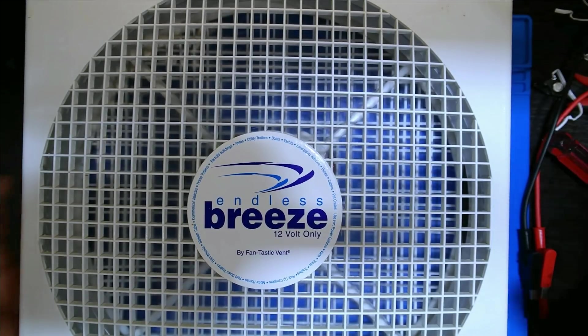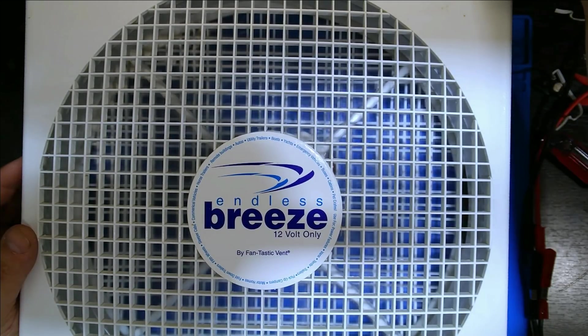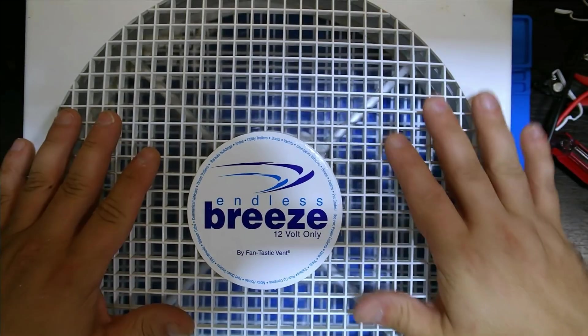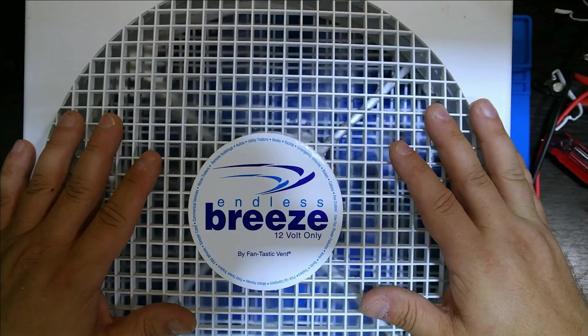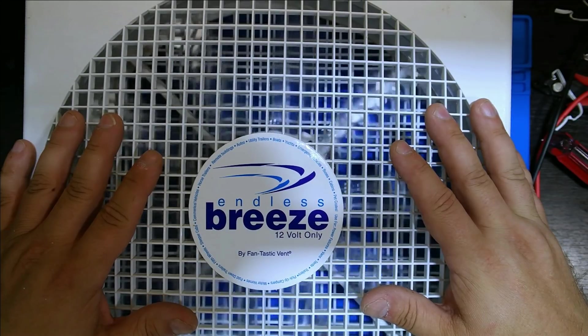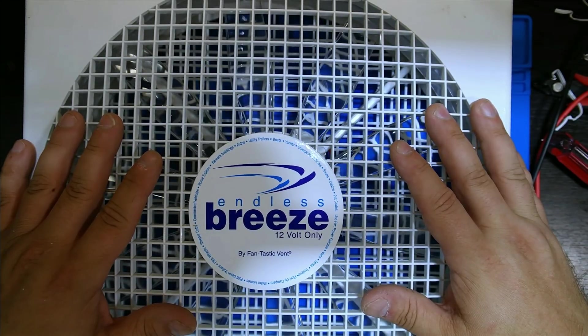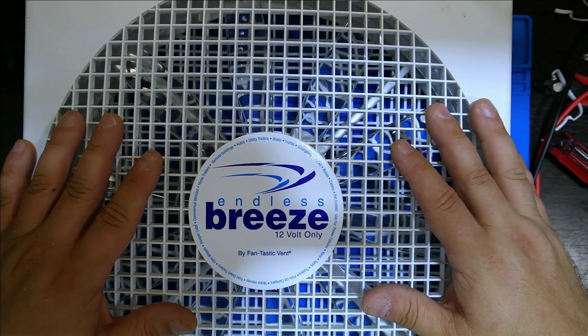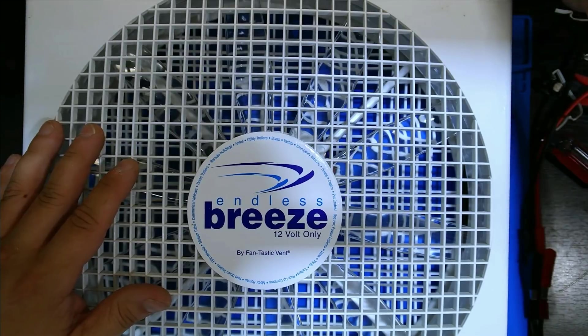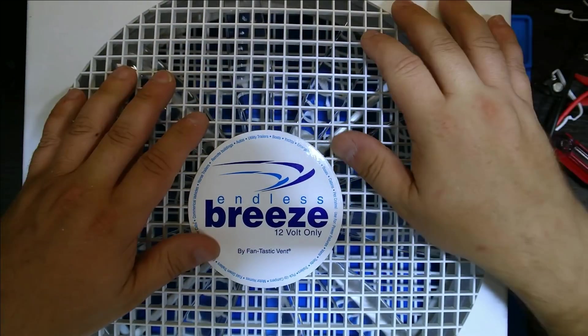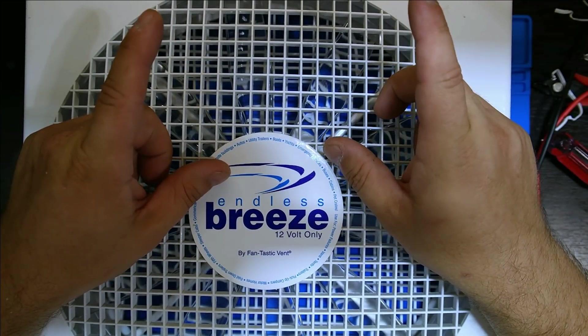And when you have the fan actually off—well, there is no on-off button, but when you have it turned off all the way, wait for the fan blade to stop—it's pulling maybe 10 milliamps. I got zero, I got 0.01 amps on my meter, which is 10 milliamps. So this thing pulls practically nothing in an off state.